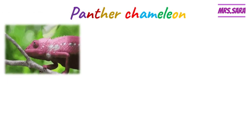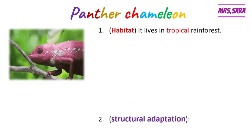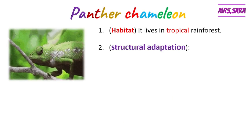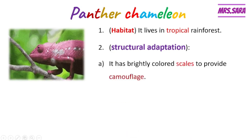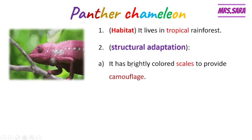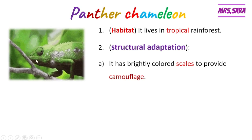Now we're going to talk about the panther chameleon. Its habitat or home is the tropical rainforest. It has a structural adaptation — if you look at this picture, you can see the change of color. That's due to the brightly colored scales that provide the panther chameleon with camouflage, allowing it to hide or blend with the surrounding environment.